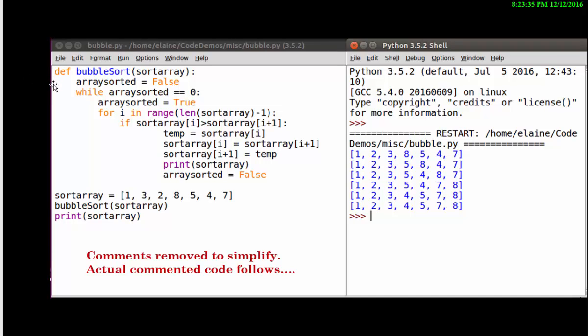So here's the program in Python. You have a bubble sort function. The array sorted Boolean variable and the outer loop to say keep looping until the array is sorted. So while the array is not sorted keep looping.